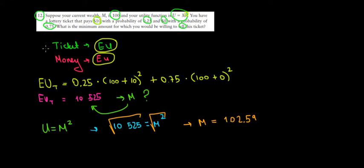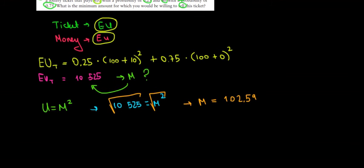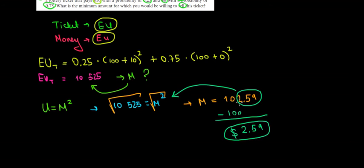Now we know that we already have $100 at the moment. So we already have $100. Meaning that additionally we need $2.59 to get to that level of expected utility. So we would sell the ticket for $2.59.